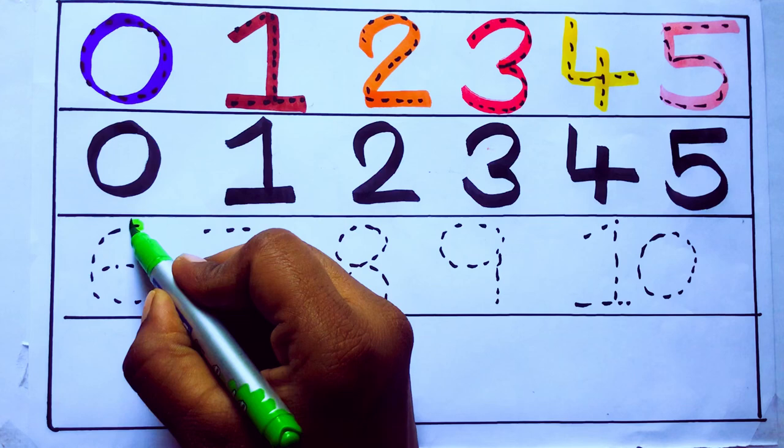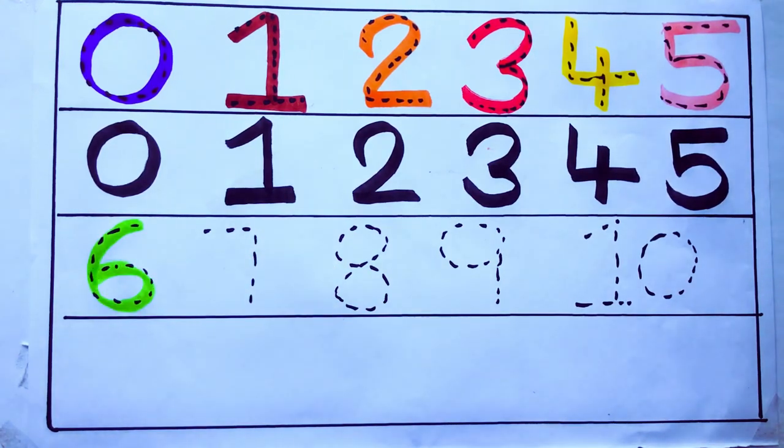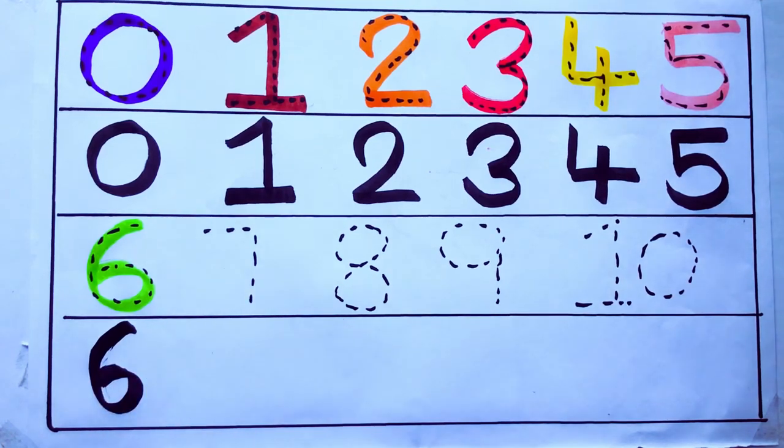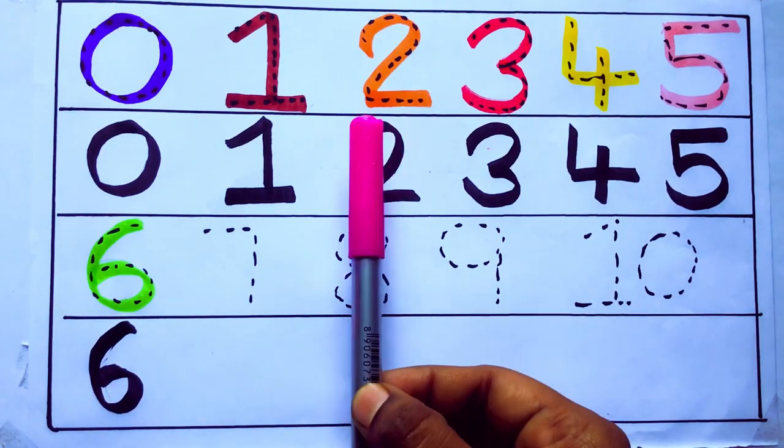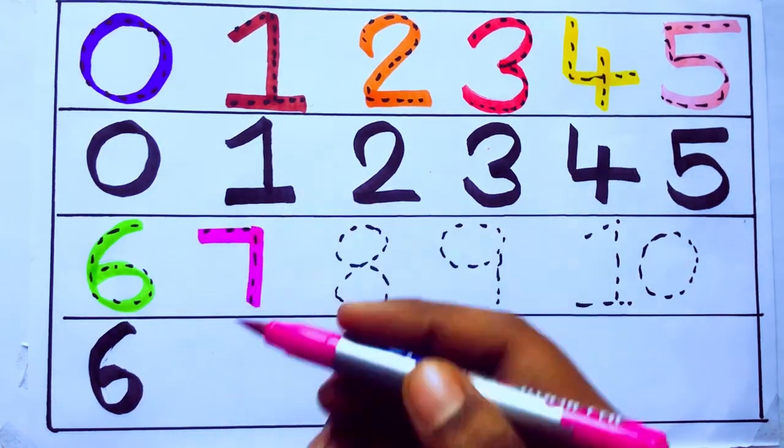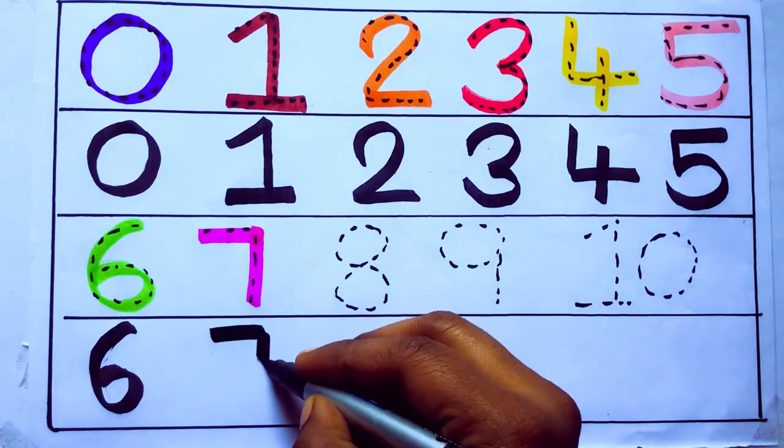Green color, 6, S, I, X, 6, number 6. Pink color, 7, S, E, V, E, N, 7, number 7.